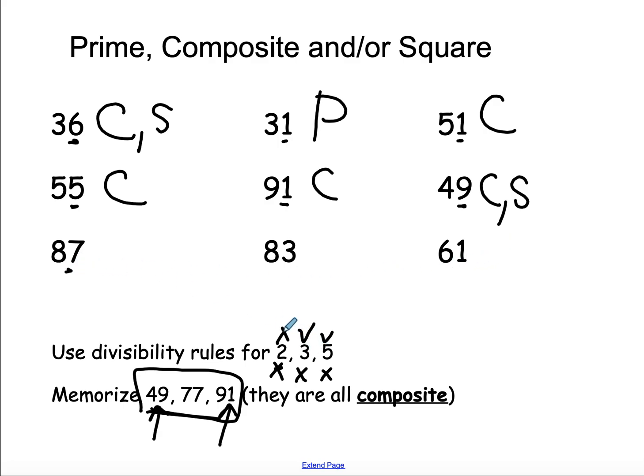87, not divisible by 2, but 8 plus 7 is 15. It is divisible by 3. It is composite.